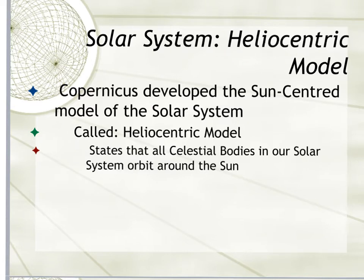The heliocentric model is in direct contrast with the geocentric model, where the Earth was actually the center of our solar system. There was also an idea called geoheliocentrism, which was this weird combination of the two of them, where the sun and moon revolved around the Earth, but the planets simultaneously revolved around the sun.